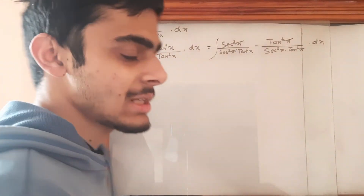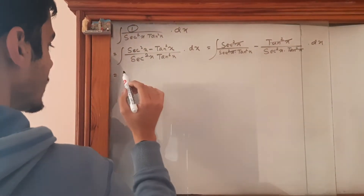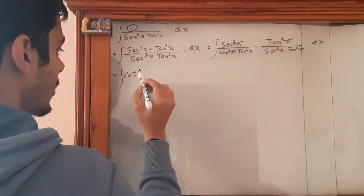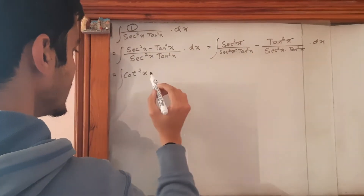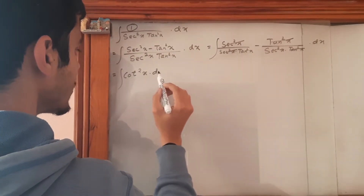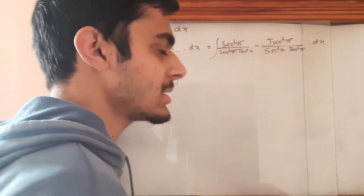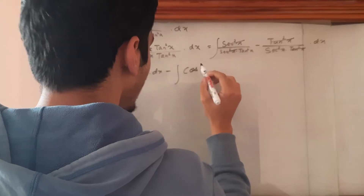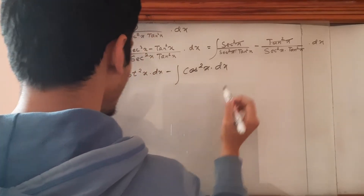After cancellation, 1 upon tan square x is of course cot square x. So we have the integration of cot square x dx minus, and 1 upon sec square x is cos square x, so minus cos square x dx.